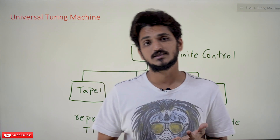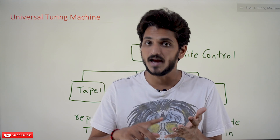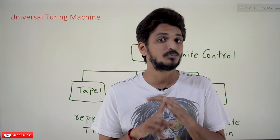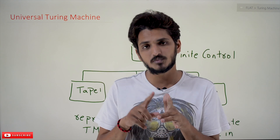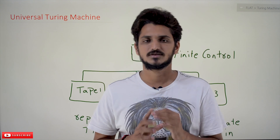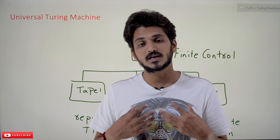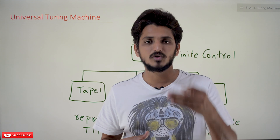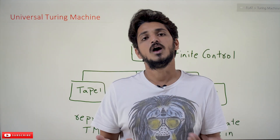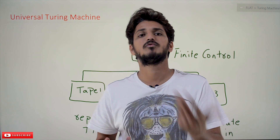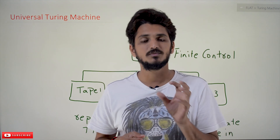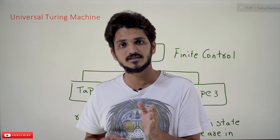In our last classes, we clearly discussed about Turing machine works as addition, subtraction, and comparison operator. We are capable of doing addition, subtraction, and comparison. If you can do these three operations, you can do any computation. Today's computers are capable of doing it. So yes, it is possible — Turing machine is exactly working as today's computers.